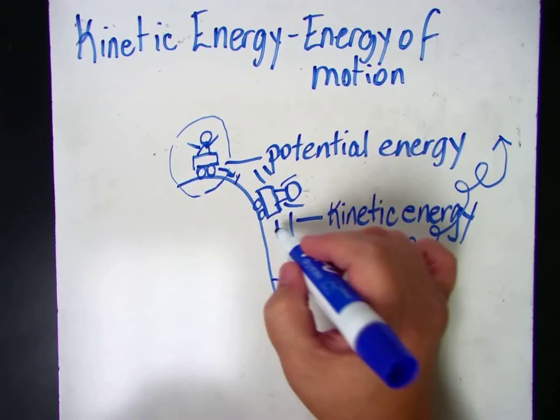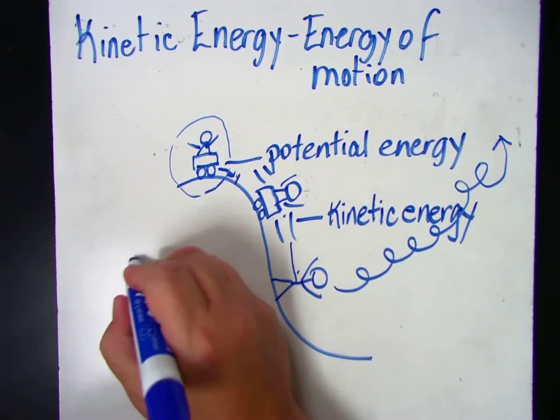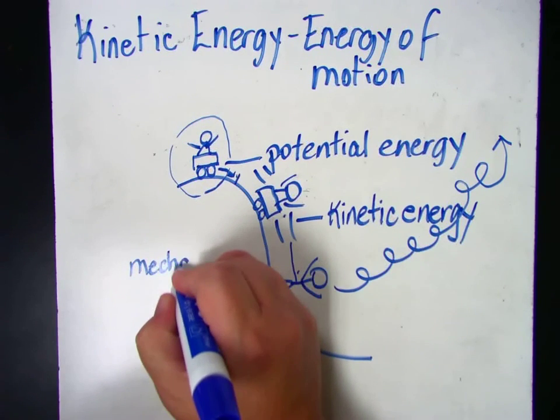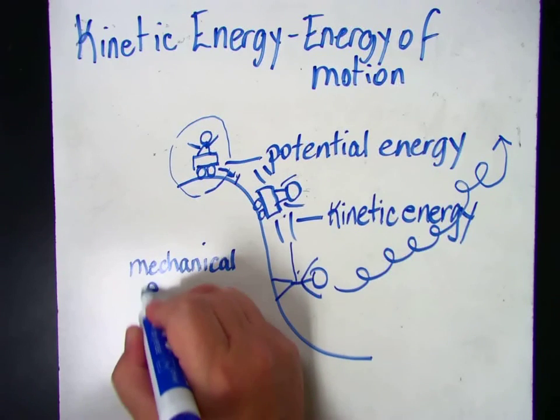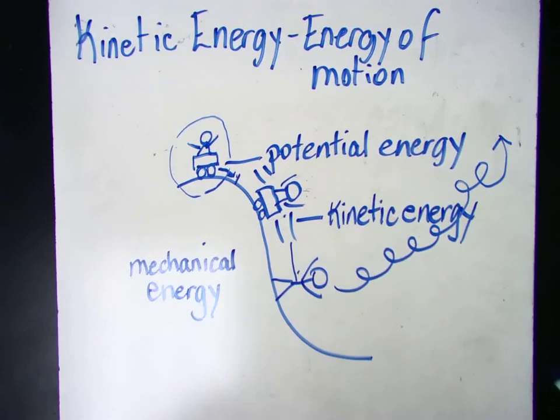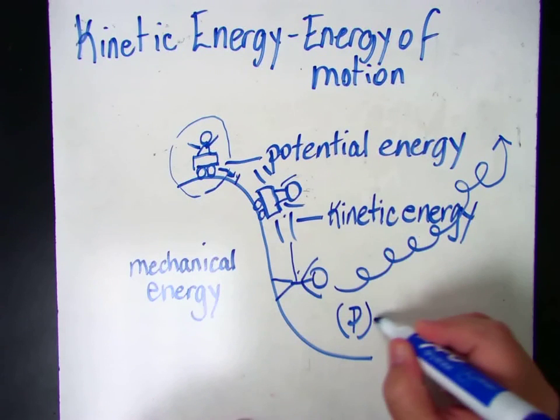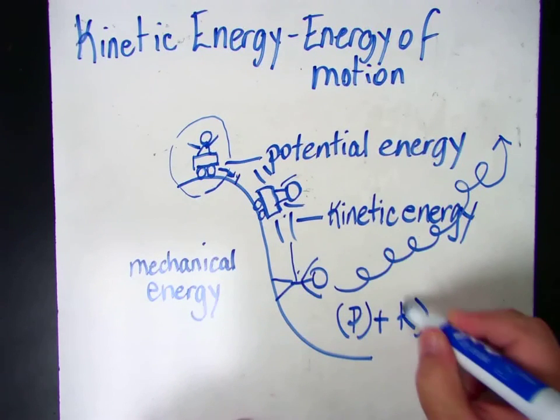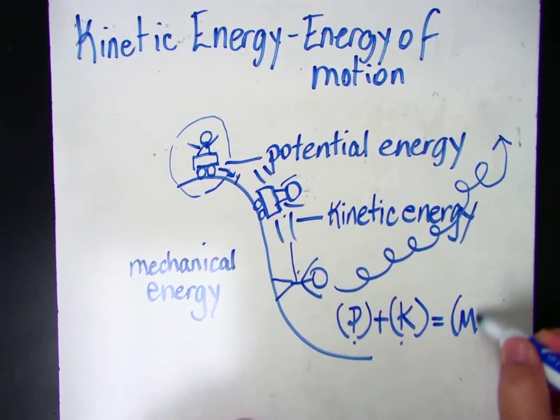So that energy that gets transferred to our friend is mechanical energy. In order to have mechanical energy, we must have potential energy and kinetic energy. What we said in class is potential plus kinetic, because we absolutely need these two in order to have mechanical.